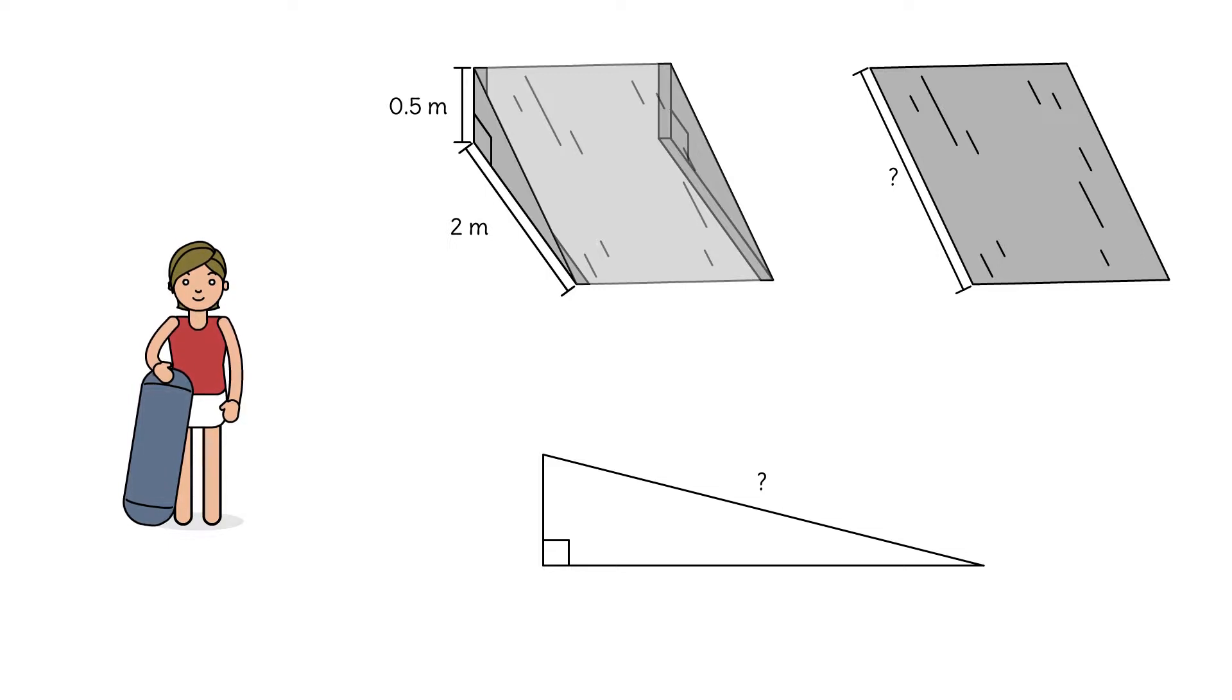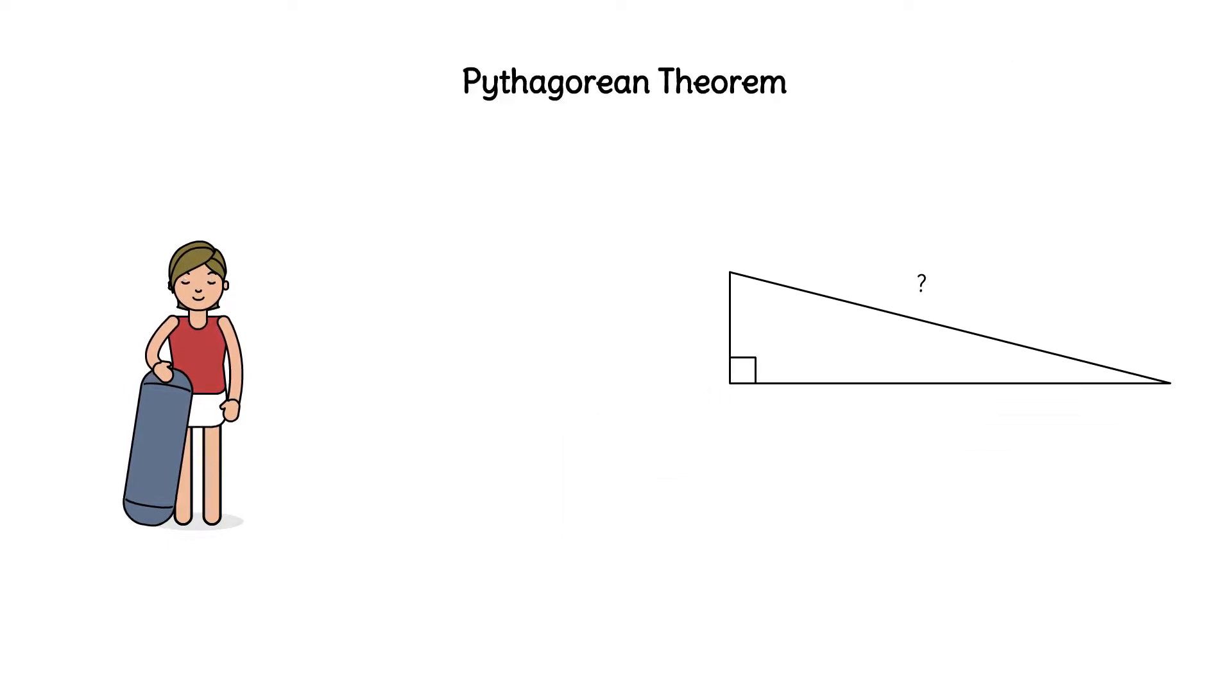Because we know the length of both legs, we can use the Pythagorean theorem to solve for the hypotenuse. Remember, the Pythagorean theorem states that a² + b² = c². a is 0.5, b is 2, and we'll solve for the hypotenuse c. 0.5² is 0.25, 2² is 4. Adding those gives us 4.25. How do we solve for c? Take the square root of 4.25, and we have c is approximately 2.06 meters.